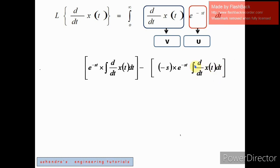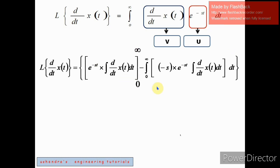This whole term will be integrated again with respect to t according to the UV rule. We need to plug in the limits of integration in the first term — zero being the lower limit and infinity being the upper limit. Remember, as we go further, the integration and differentiation operators cancel each other out, and we'll be left with only x(t). The next step: integration and differentiation cancel, leaving e^(-st) times x(t), and in the second term integration and differentiation also cancel, leaving x(t).